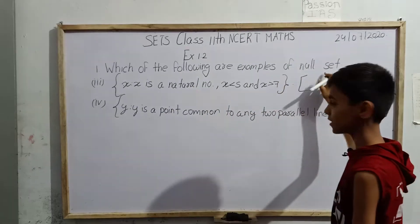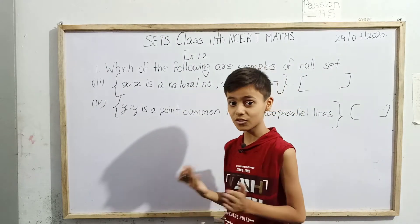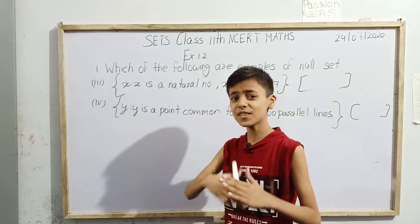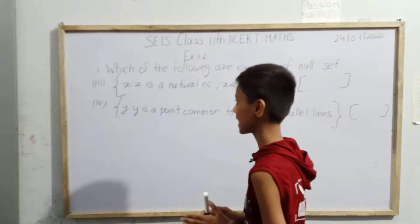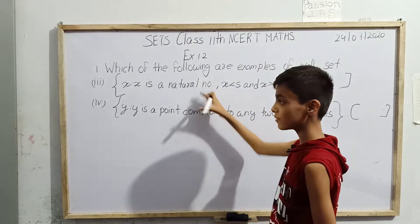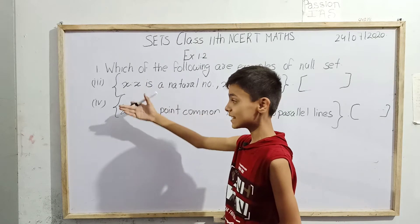We have already studied what are null sets. Empty sets are also called null sets - such sets in which there exists no element. Here we can see some examples, we have to tell which of them are null sets.